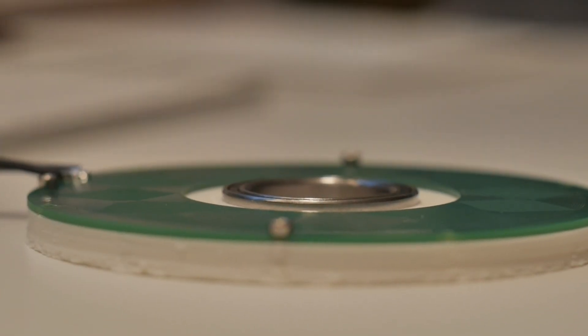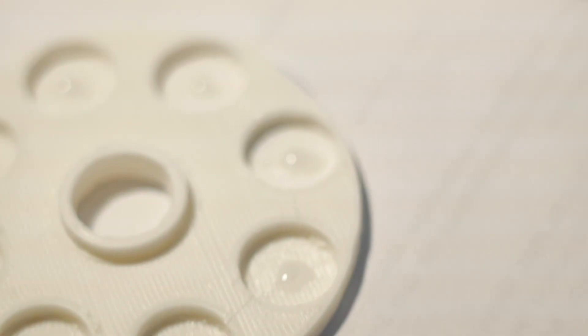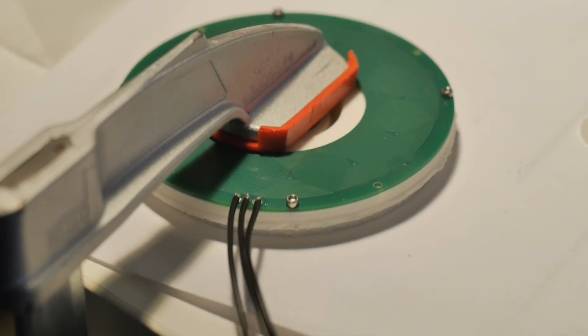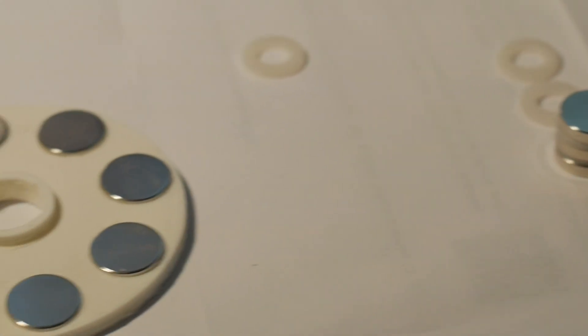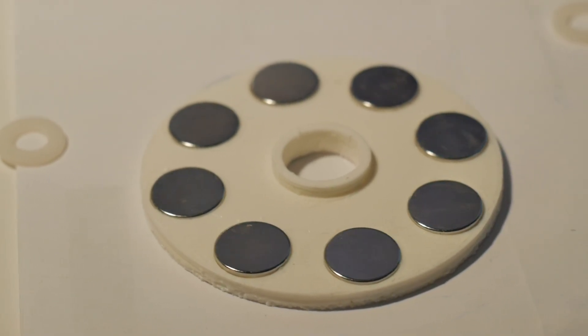We need to insert the bearing into the 3D printed part as well as gluing the magnets to the 3D printed rotor. Since the windings of the PCB motor tend to run a bit on the hotter side, I decided to print all parts from ABS to prevent warping due to heat.